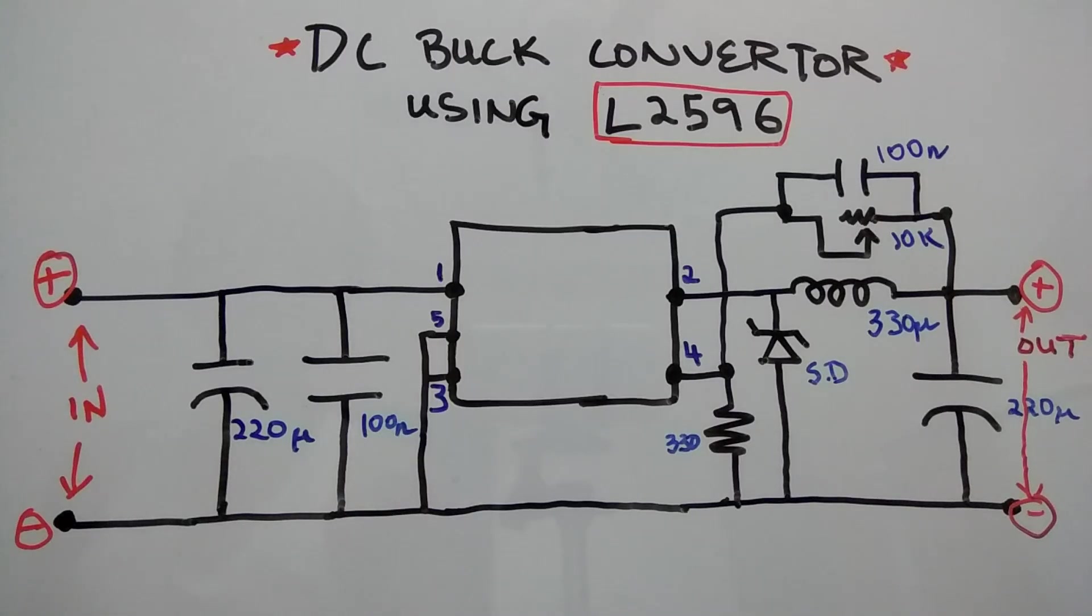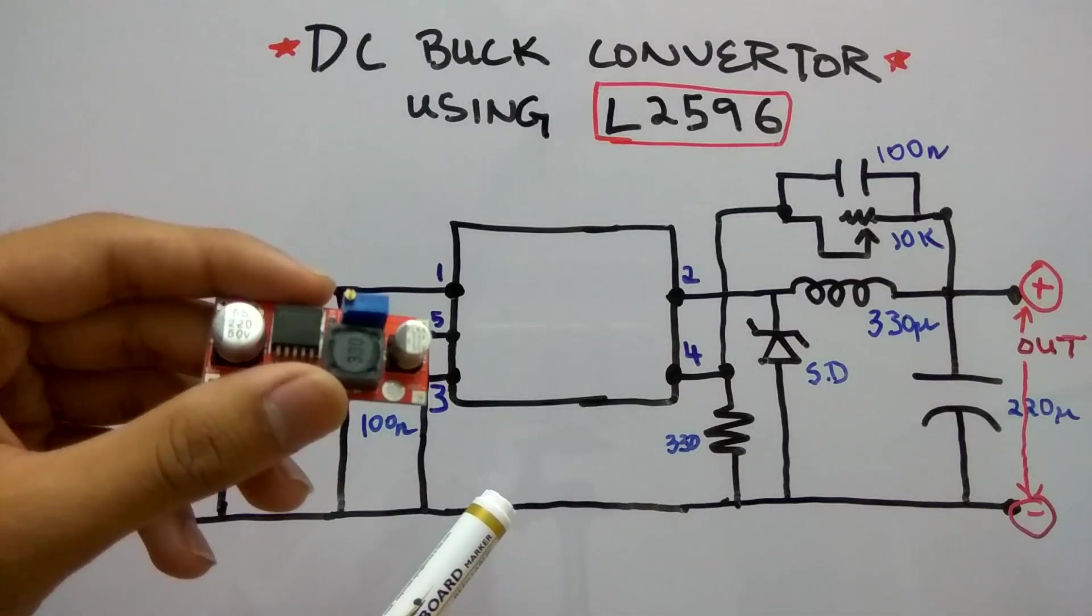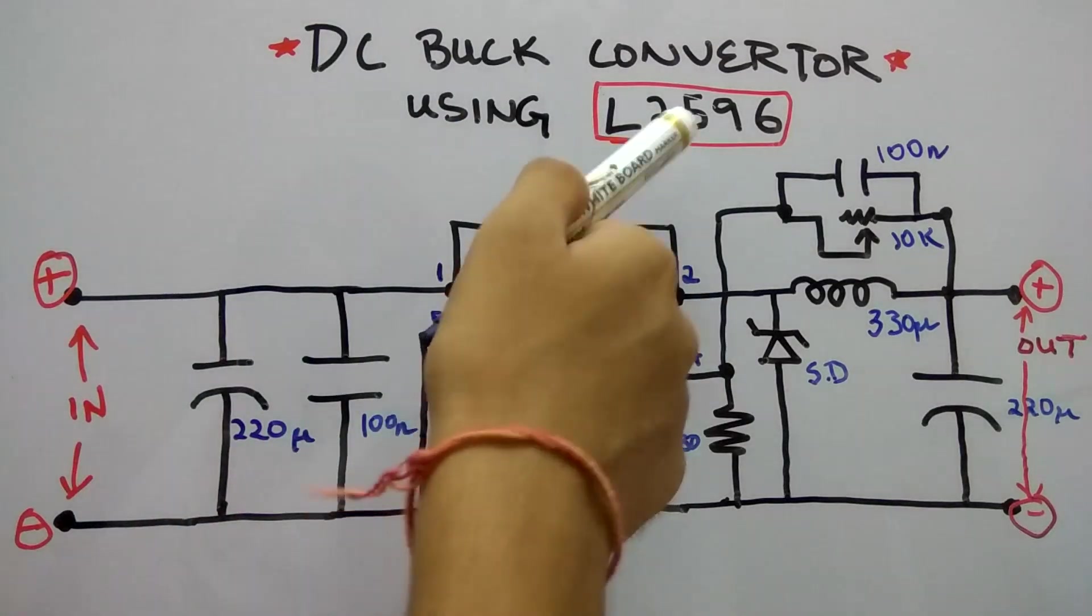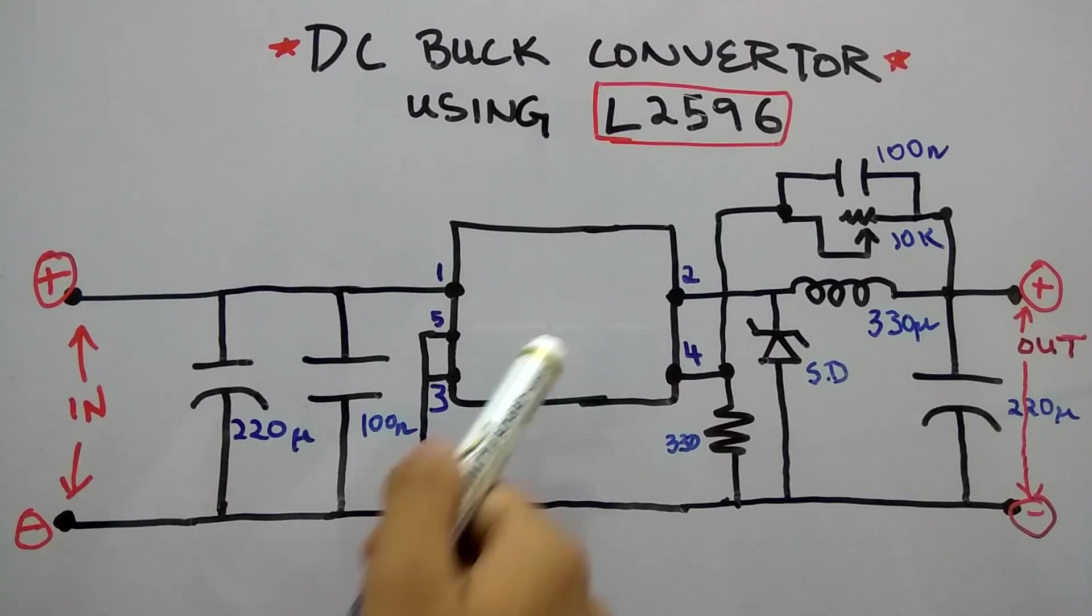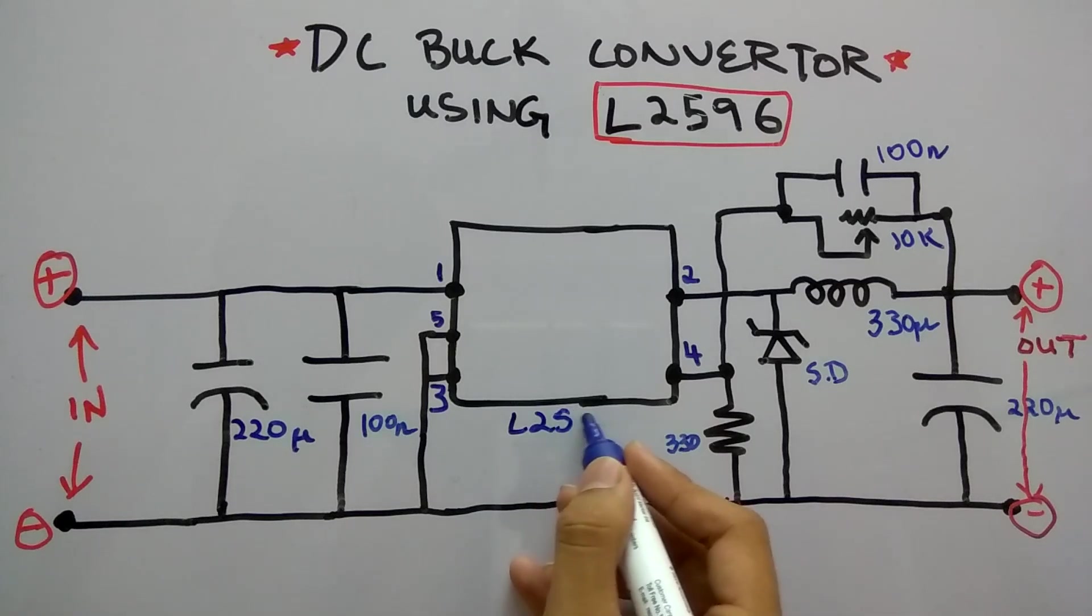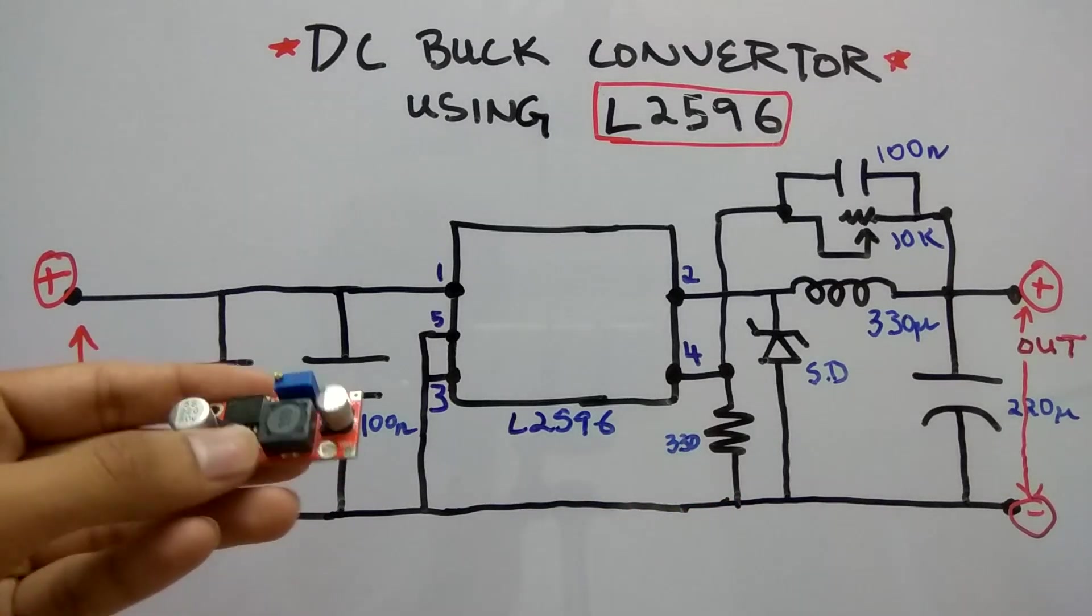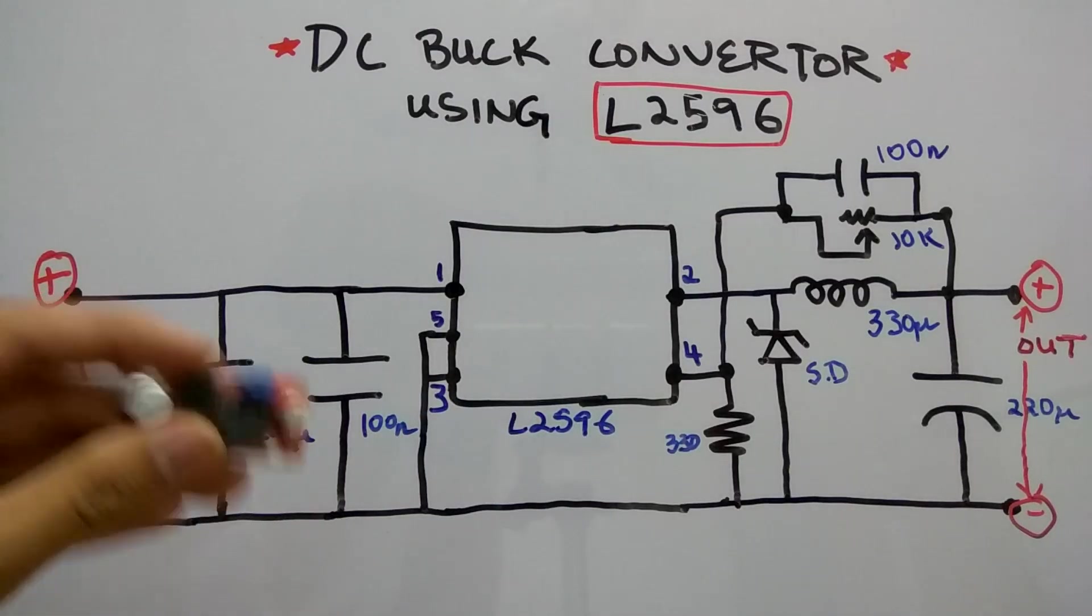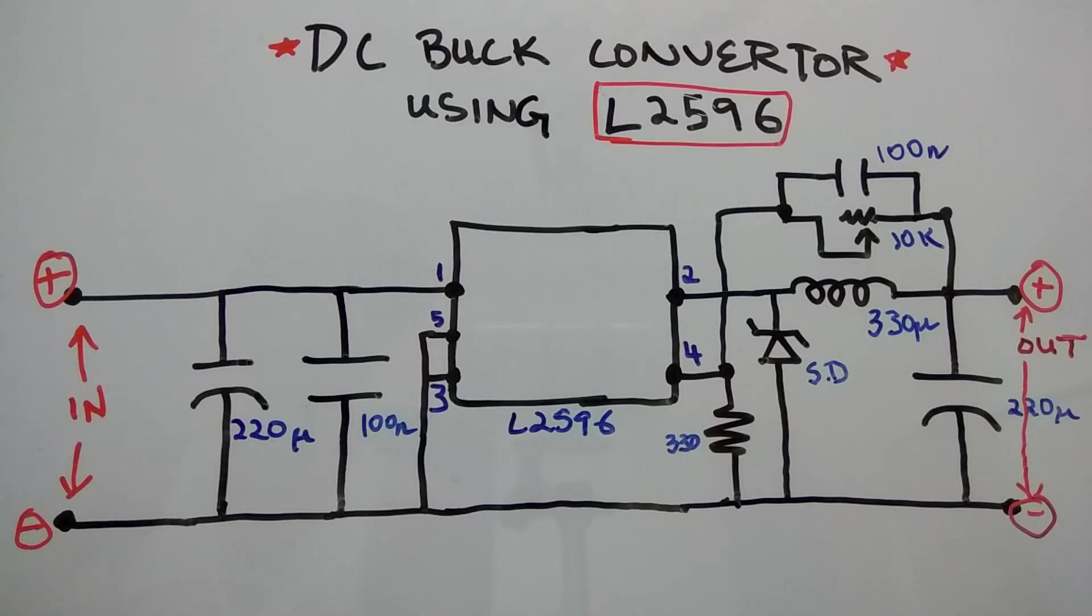Okay, so I was successful in making the circuit diagram of this DC buck converter using the L2596, which is this part right here - the L2596. I did some reverse engineering and took some help from the internet and this was the result of this circuit right here.